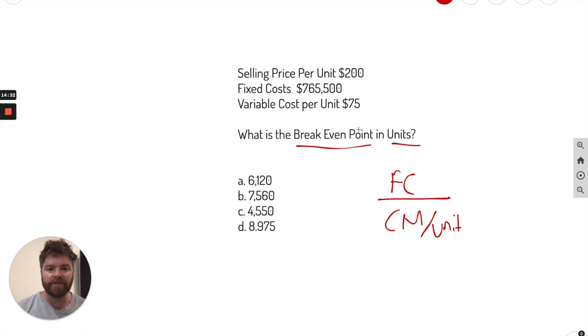Let's just plug in our numbers. Well, first off we've got to get our contribution margin per unit. We know our selling price is $200. So we're going to go ahead and do the math. Minus 75, 125. So we have our contribution margin per unit. Now we plug in our fixed costs. 765,500. Let's go ahead and do the math on that. 765,500 divide it by 125.